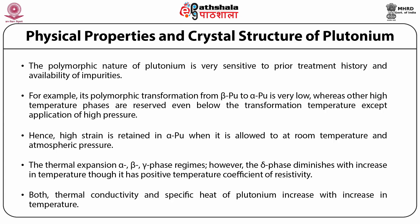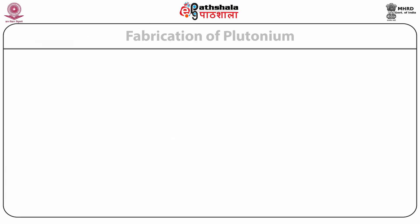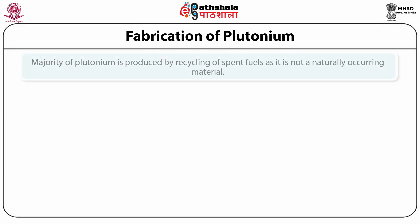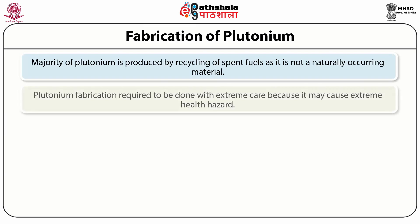Plutonium also has the lowest temperature specific heat of any pure element. Now we will discuss how plutonium can be fabricated. The majority of plutonium is produced by recycling of spent fuels as it is not a naturally occurring material. Besides recycling, unused nuclear weapons could also provide some plutonium. Plutonium fabrication must be done with extreme care because it may cause extreme health hazards.